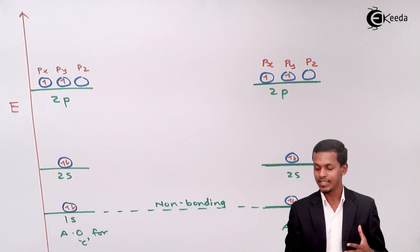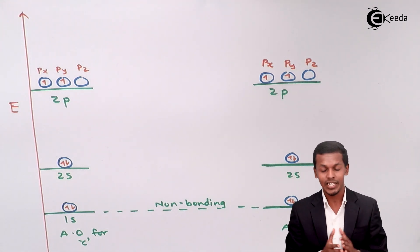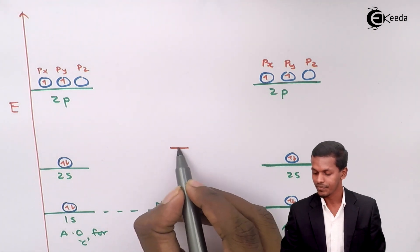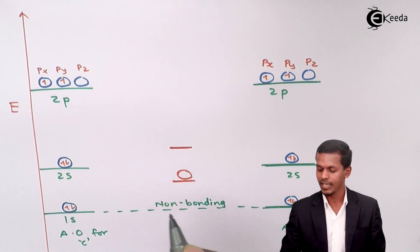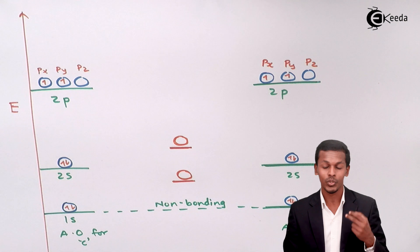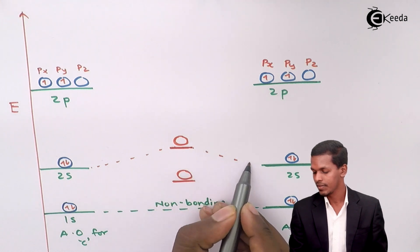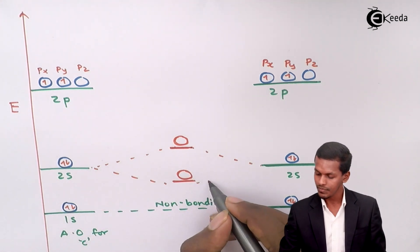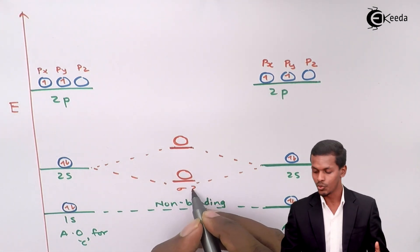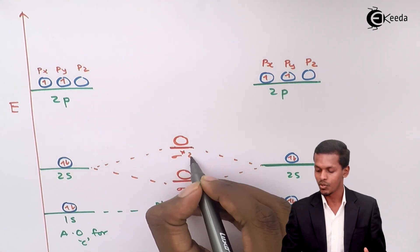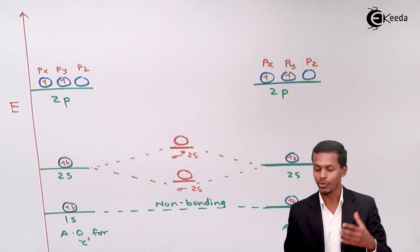Talking about the 2s orbitals: the 2s of one carbon atom and the 2s of the other carbon atom combine to give two different energy levels — each consisting of one orbital since two atomic orbitals combine. The lower energy level is the bonding orbital, designated as sigma 2s, while the upper one is the anti-bonding orbital, designated as sigma star 2s.